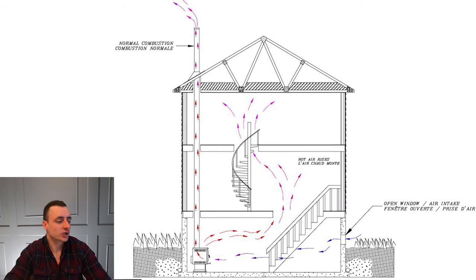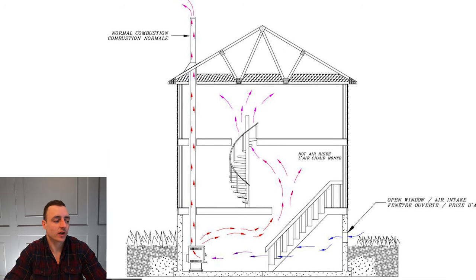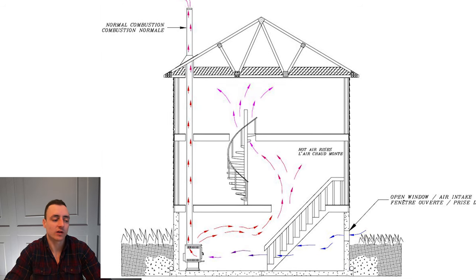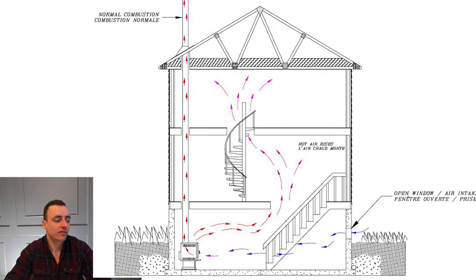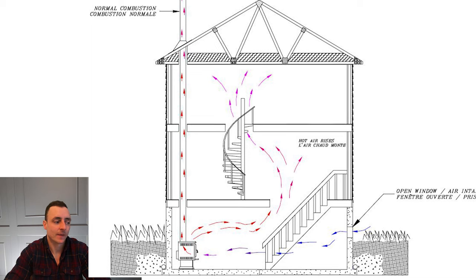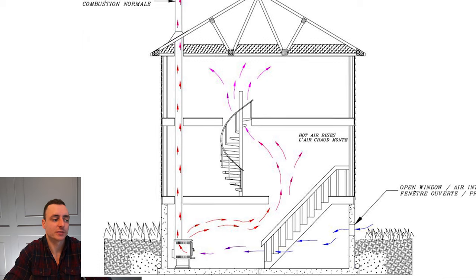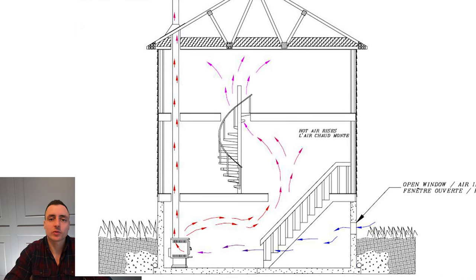Our first diagram shows a stove functioning under normal and adequate conditions. The heat rises to the upper floors and the room where the stove is located has an adequate supply of oxygen. The chimney draft is sufficient and the combustion gases are evacuated normally through the exhaust system. You can see those red arrows flowing nicely from the stove up out of the chimney, with hot air rising into the house to heat your environment.